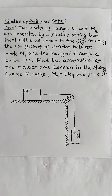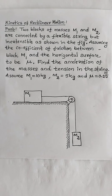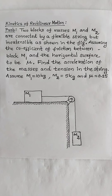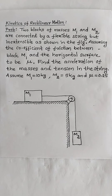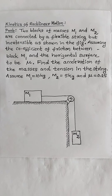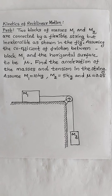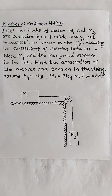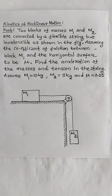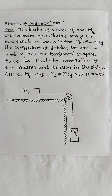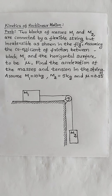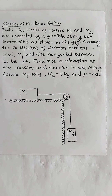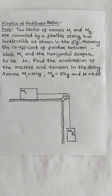I will read the problem statement. Two blocks of masses M1 and M2 are connected by a flexible but inextensible string as shown in the figure. Assuming the coefficient of friction between block M1 and the horizontal surface to be mu, find the acceleration of the masses and tension in the string. Assume M1 equal to 10 kg, M2 equal to 5 kg, and mu equal to 0.25.